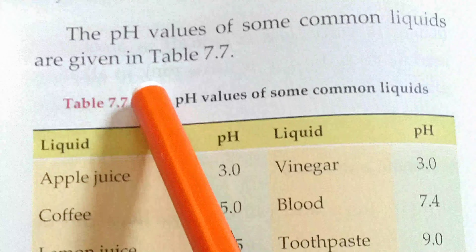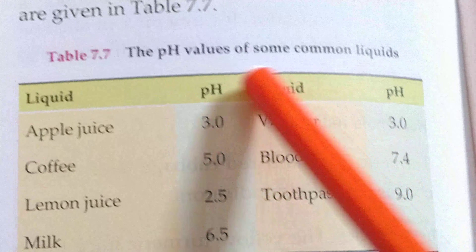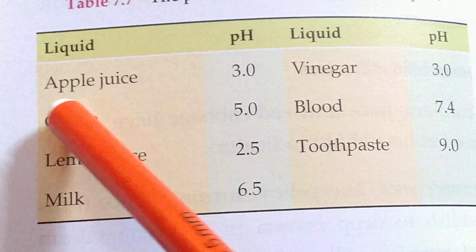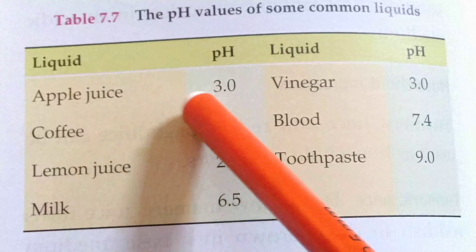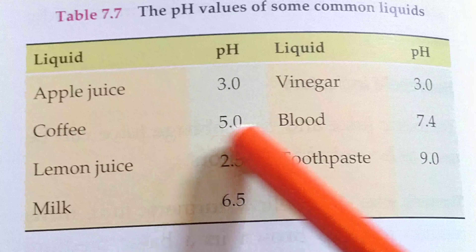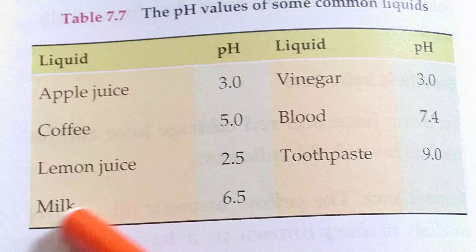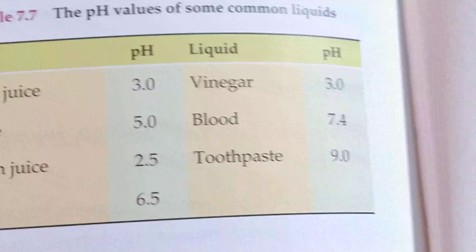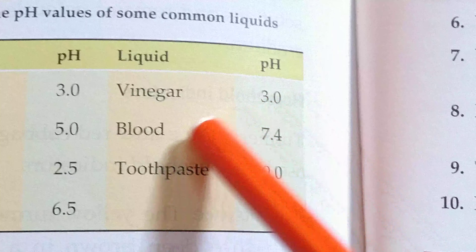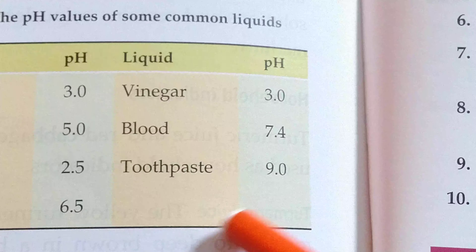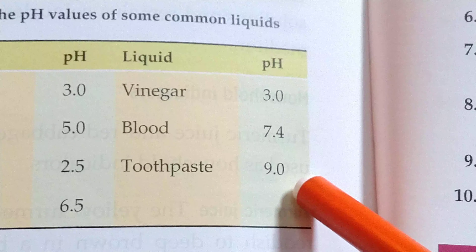The pH values of some common liquids are given in table 7.7. Apple juice: 3.0. Coffee: 5.0. Lemon juice: 2.5. Milk: 6.5. Vinegar: 3.0. Blood: 7.4. Toothpaste: 9.0. Students, you will learn this chart.